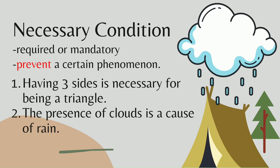In order for us to call a shape a triangle, it is necessary or required to have three sides. When we say that the presence of clouds is a cause of rain, we mean cause in the sense of necessary condition — meaning without clouds, there is no rain. But we know that clouds alone are not enough; other necessary conditions for rain include certain combinations of pressure and temperature.